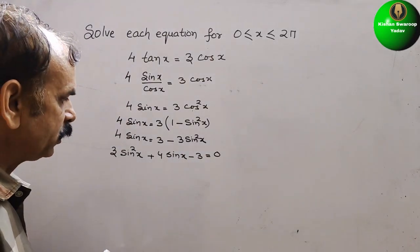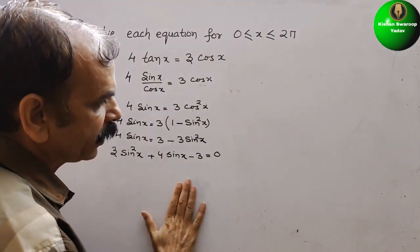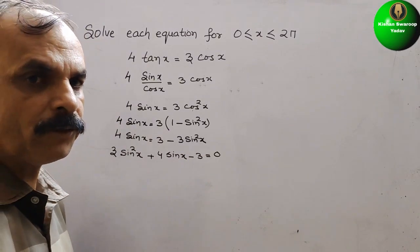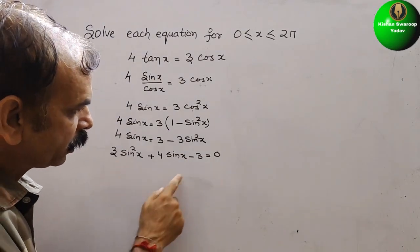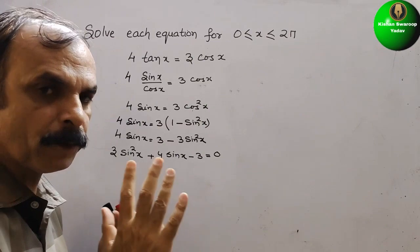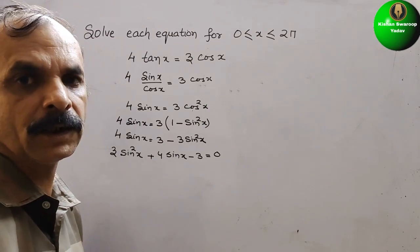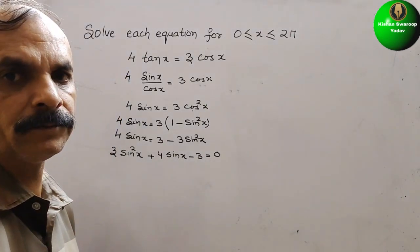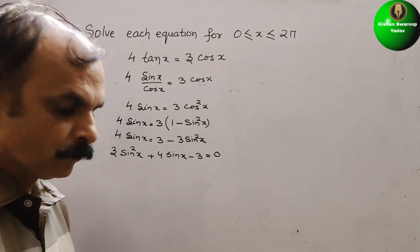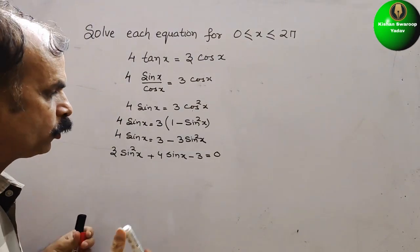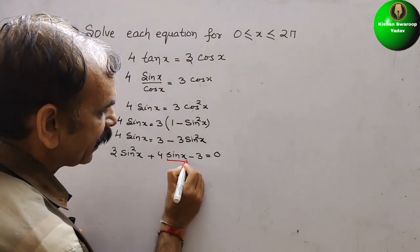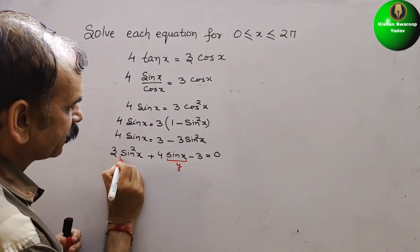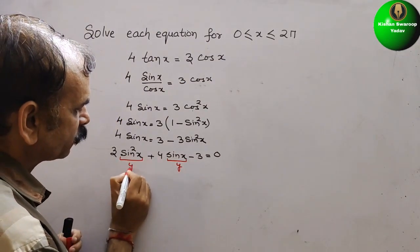Now, if you see, this is nothing but a quadratic equation. So here what we have to do: if you go for middle term splitting, it will not be possible. So here we will go for the quadratic formula. For that, we have to take sin(x) as y and sin²(x) as y².